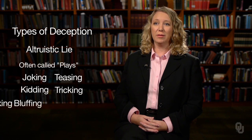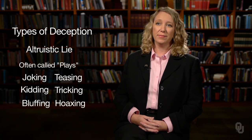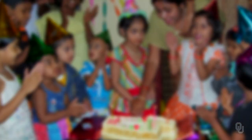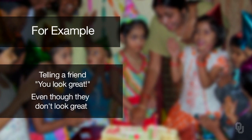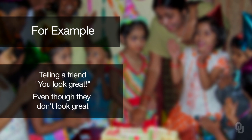The fourth type is what is called an altruistic lie, or what Burgoon and Buller call playings. This can include joking, teasing, kidding, tricking, bluffing, and even hoaxes. Have you ever planned a surprise party for someone? You have to lie to them in order to do it. Altruistic lies are those that are told for the benefit of someone else, like telling a friend they look great even if they're feeling down and they don't really think so.